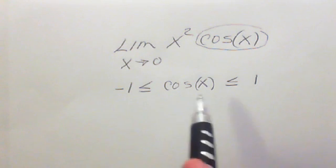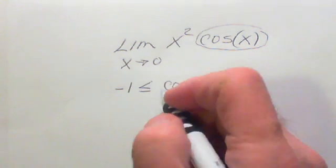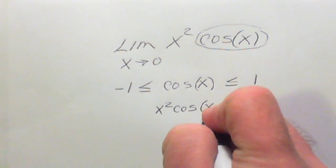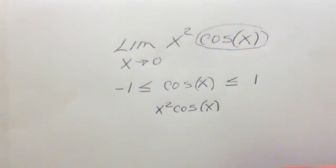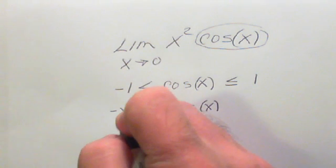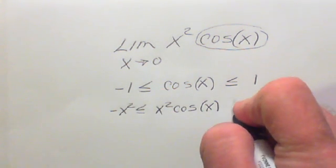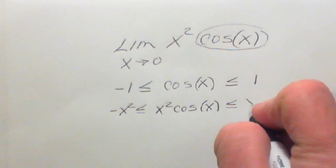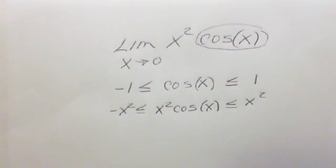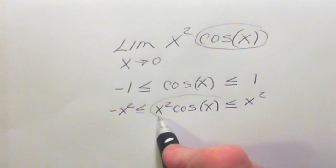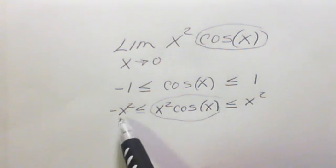Now we want to start multiplying things back in — we need to get the x squared in. So I can put x squared here and multiply it by the cosine of x. To do that, I have to multiply both sides by x squared. So this becomes negative x squared less than or equal to x squared cosine x, and this would be positive x squared. Once you have the middle part exactly as what you had in the beginning, you just have to take the limit of both sides.